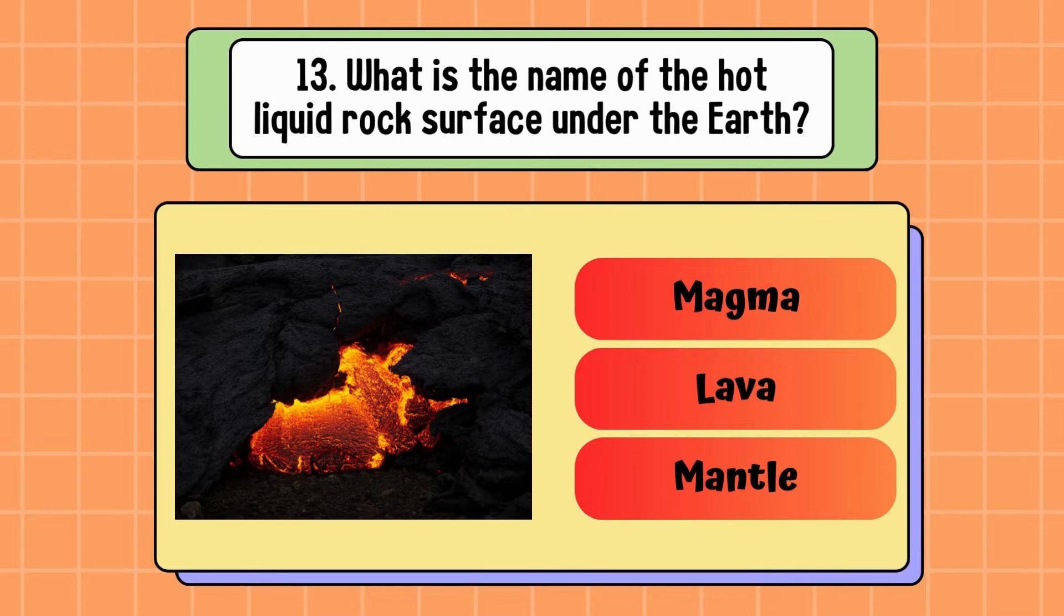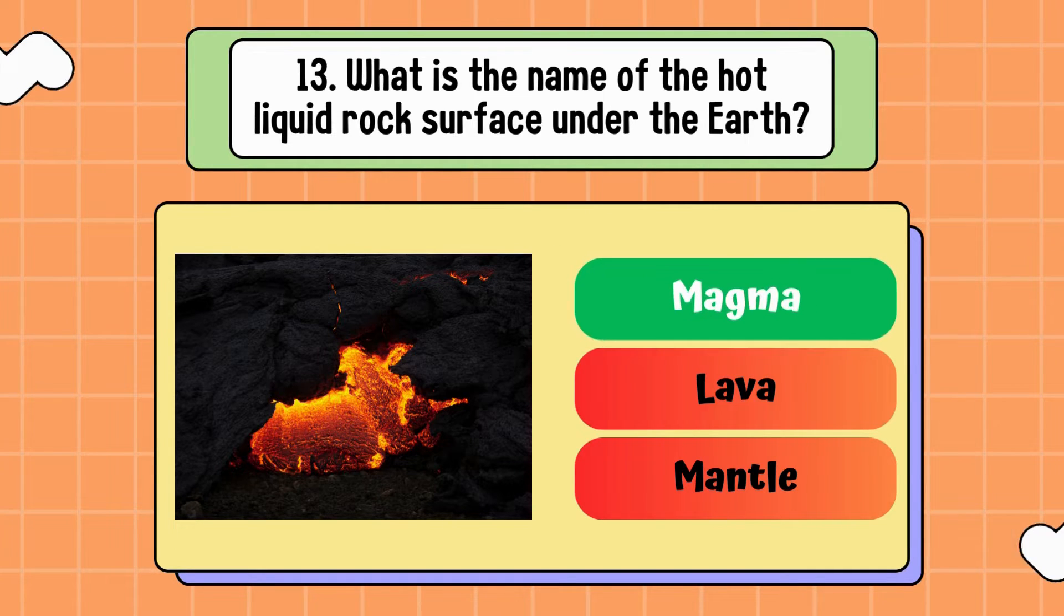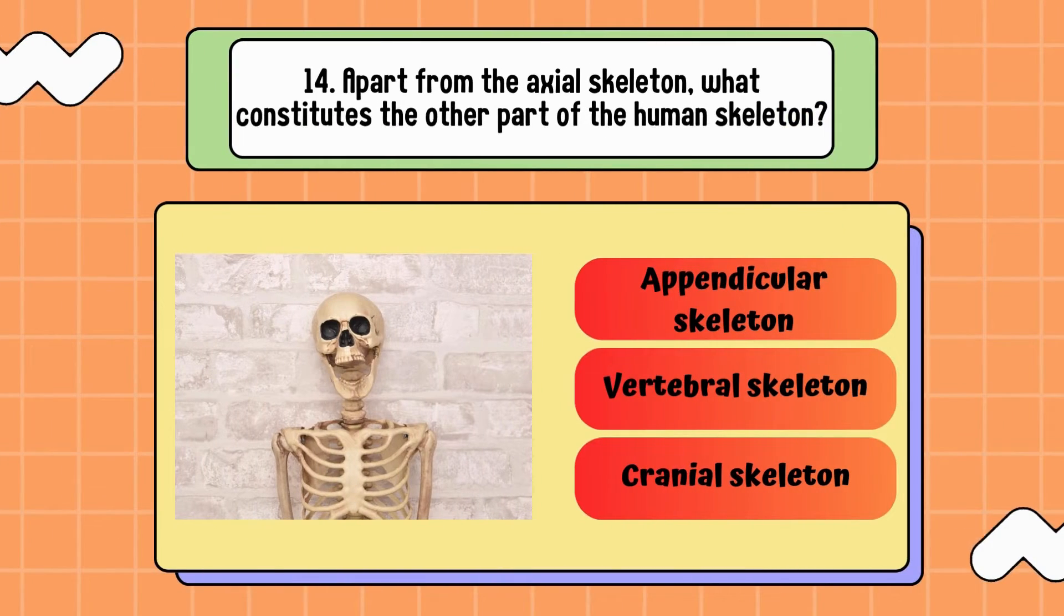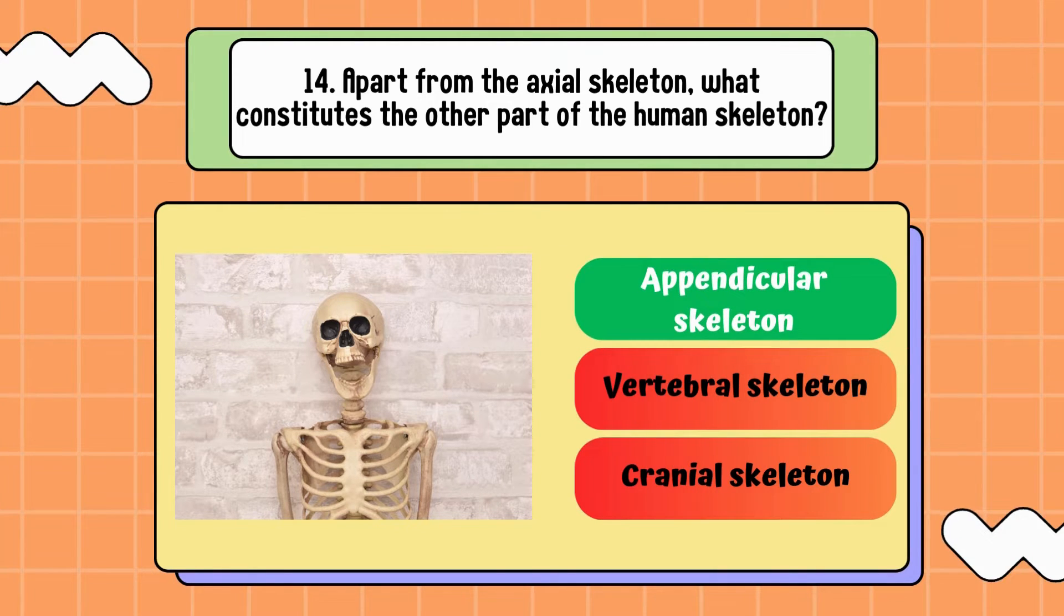What is the name of the hot liquid rock surface under the Earth? Is it magma, lava, or mantle? Correct answer is magma. Apart from the axial skeleton, what constitutes the other part of the human skeleton? Is it appendicular skeleton, vertebral skeleton, or cranial skeleton? Answer is appendicular skeleton.